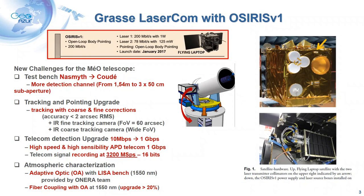The OSIRIS experiment was conducted with the Flying Laptop satellite. It is an open-loop body-pointing satellite with a data rate of 200 megabits per second onboard. This experiment introduced new challenges for the MEO telescope: we had to move from the Nasmyth focus to the Coudé focus to add more detection channels and to emulate three telescopes of 50 centimeters diameter. We used upgraded tracking and pointing for fine and coarse tracking, a telecom detection upgrade from 10 megabits to up to 1 gigabit per second, and telecom signal recording at 4.2 giga-samples per second.